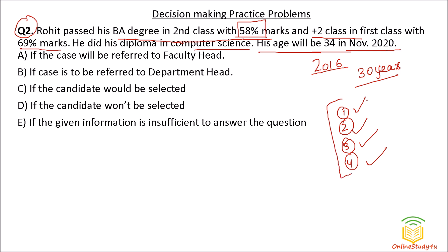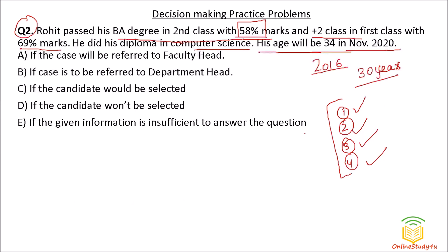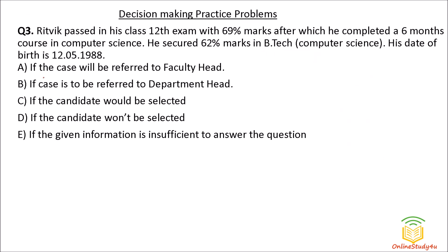The condition says age should be between 21 and should not have crossed 30 — so his age is exactly 30 years, which satisfies condition two. He is satisfying all four conditions: 12th pass with more than 60 percent, age between 21 and 30, graduation with 58 percent, and a diploma in computer science. So the candidate would be selected — option C is the correct answer.